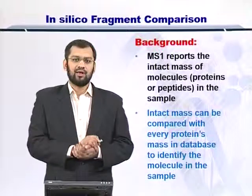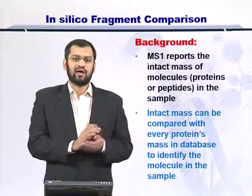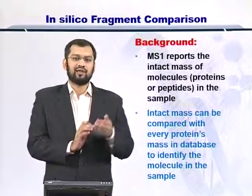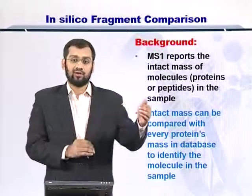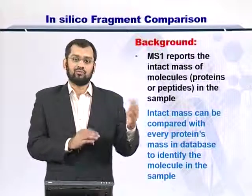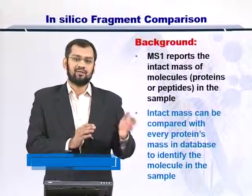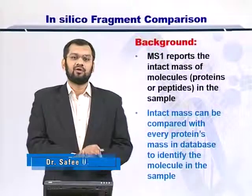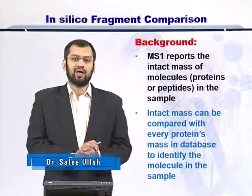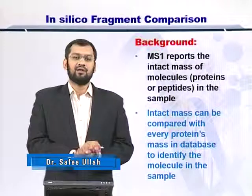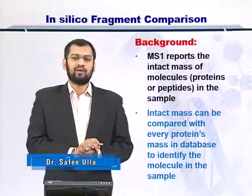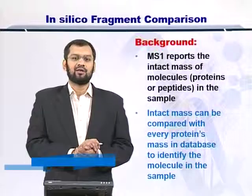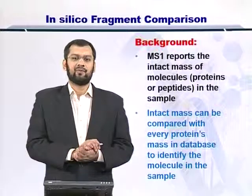However, if you do not have a single candidate protein but you get a long list of proteins that are similar in mass to the mass measured in the experiment, then what do you do? So you move on to something that is called MS2.